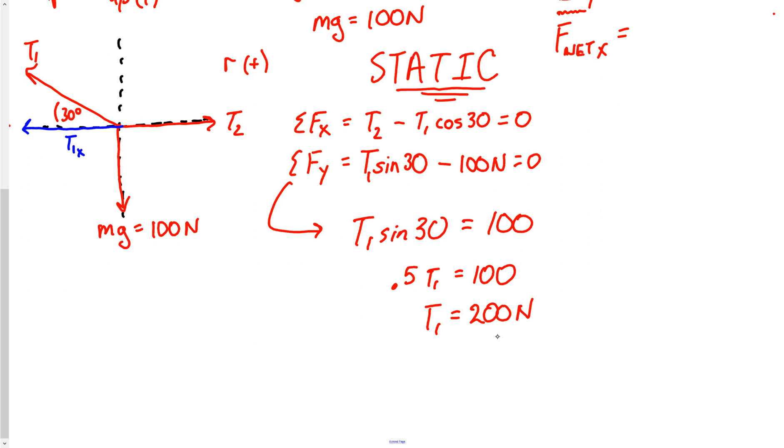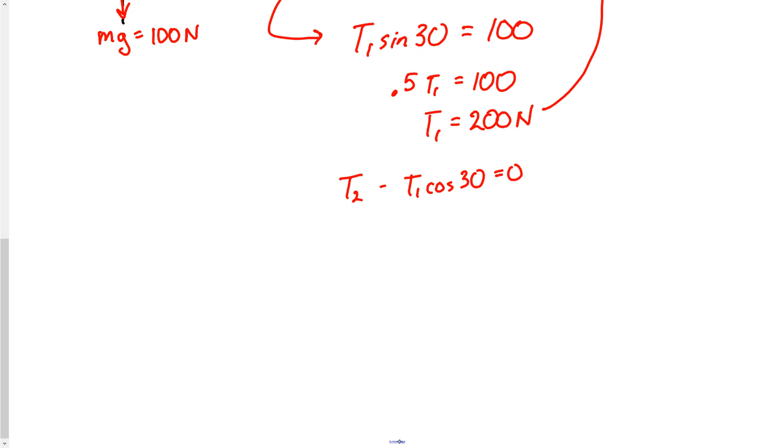So now what if we want to find T2? We'll just go back to this x equation and substitute. So I know that T2 minus T1 cosine of 30 is equal to 0. So all I have to do at this point is plug back in that 200. So this would be T2 minus 200.